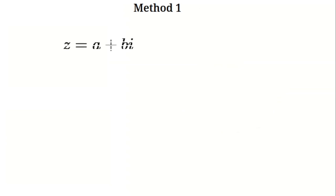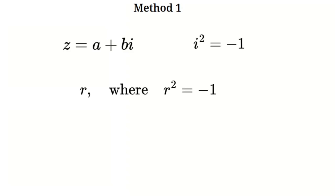The first method. Let's begin with what we already know: complex numbers. A complex number is usually written as a plus b times i, where i is the square root of negative one — in other words, i squared equals negative one. Now let's get adventurous. What happens if we take this complex number and multiply it by a brand new imaginary unit? Let's call this new unit r, and we'll say that r squared also equals negative one.